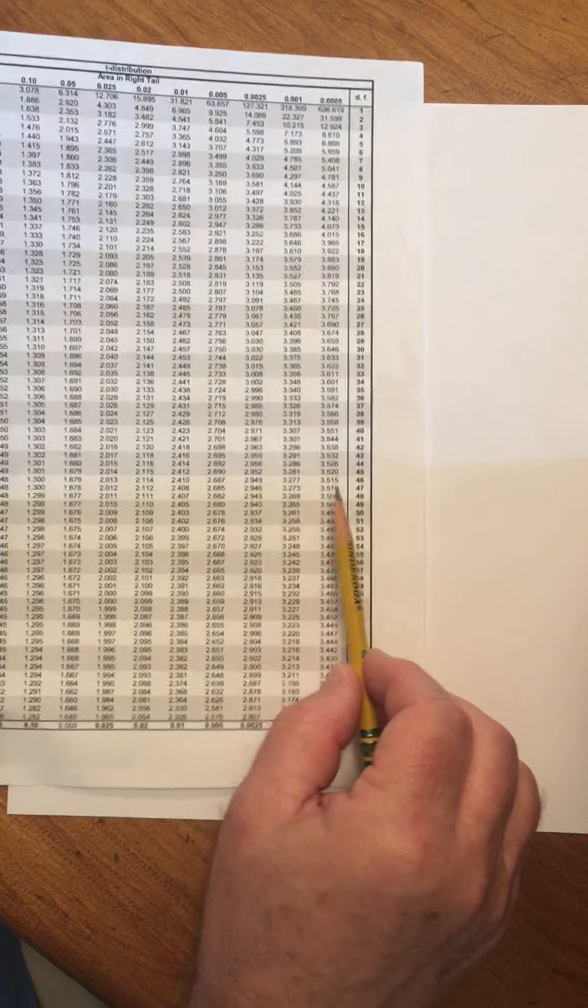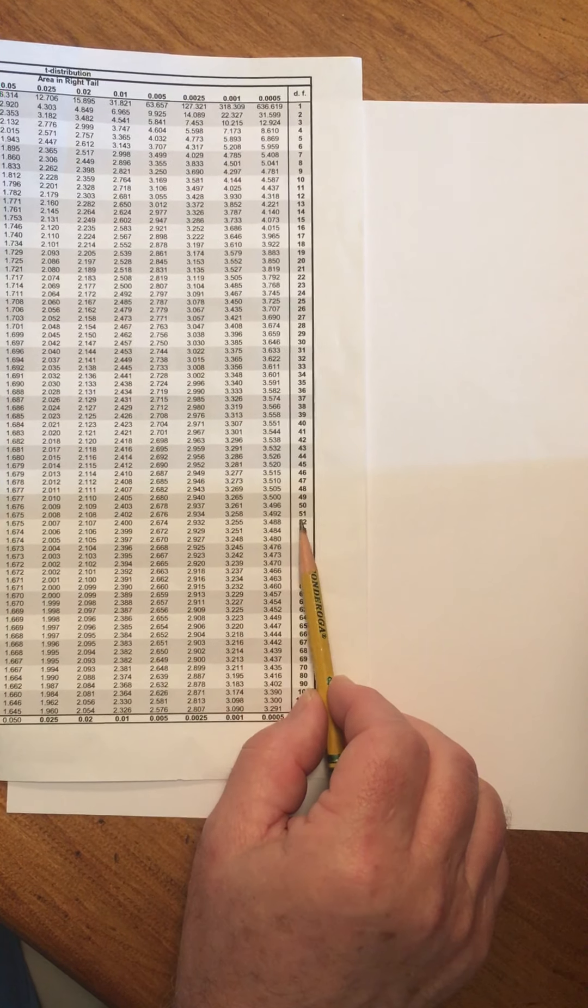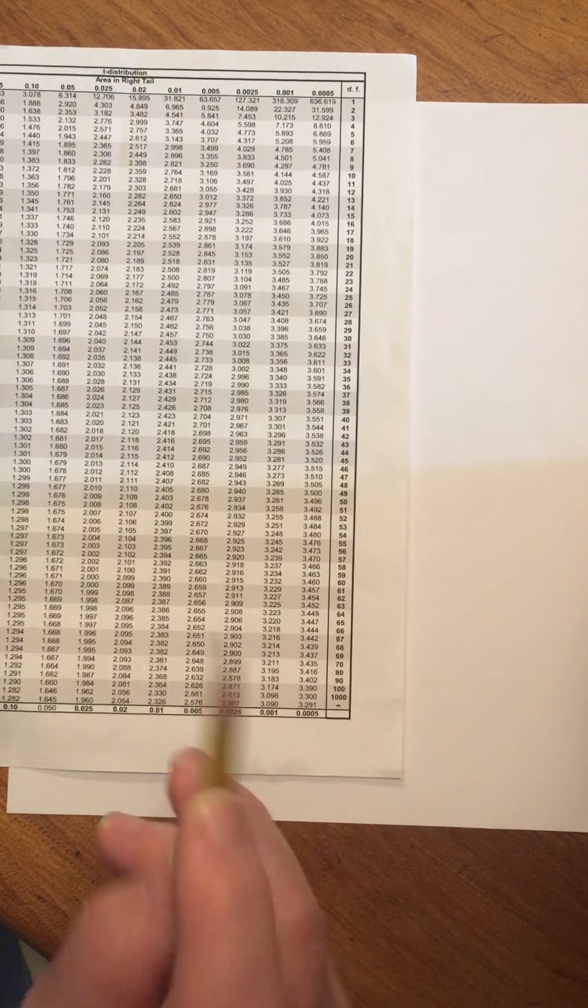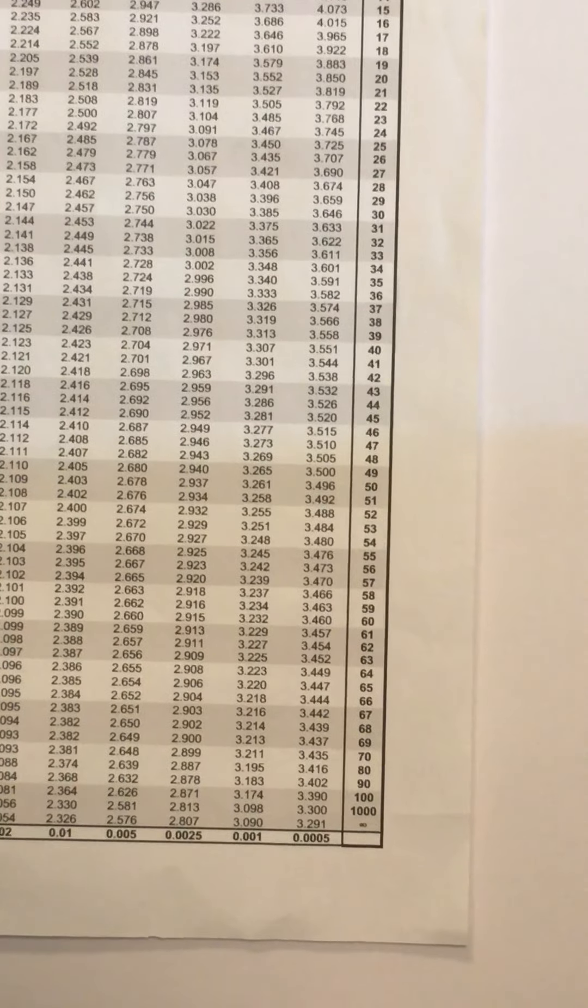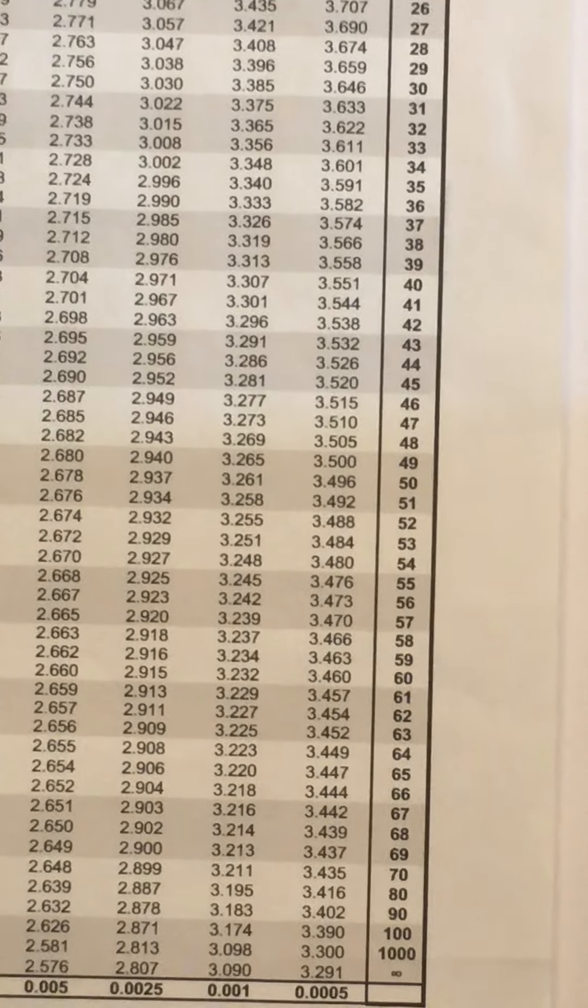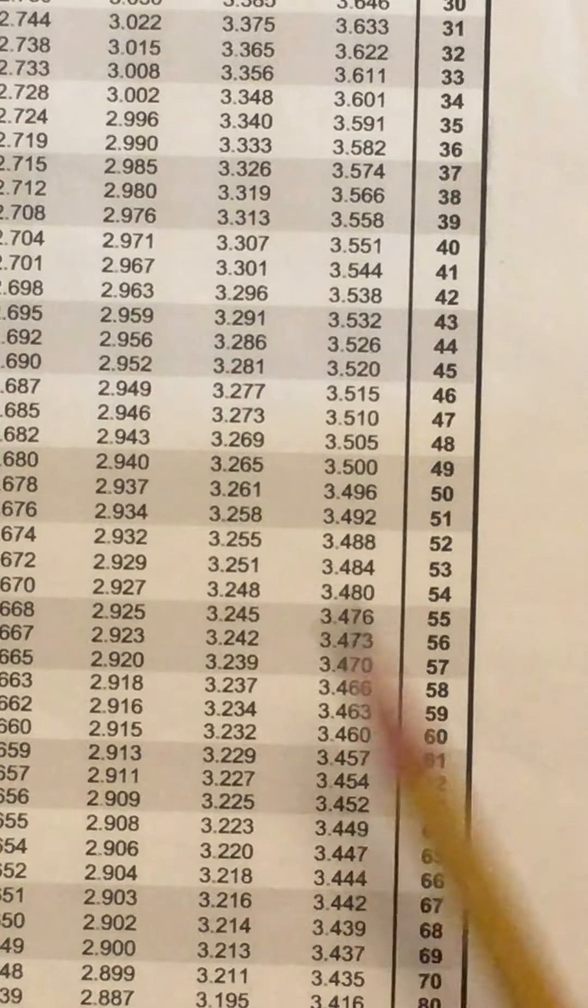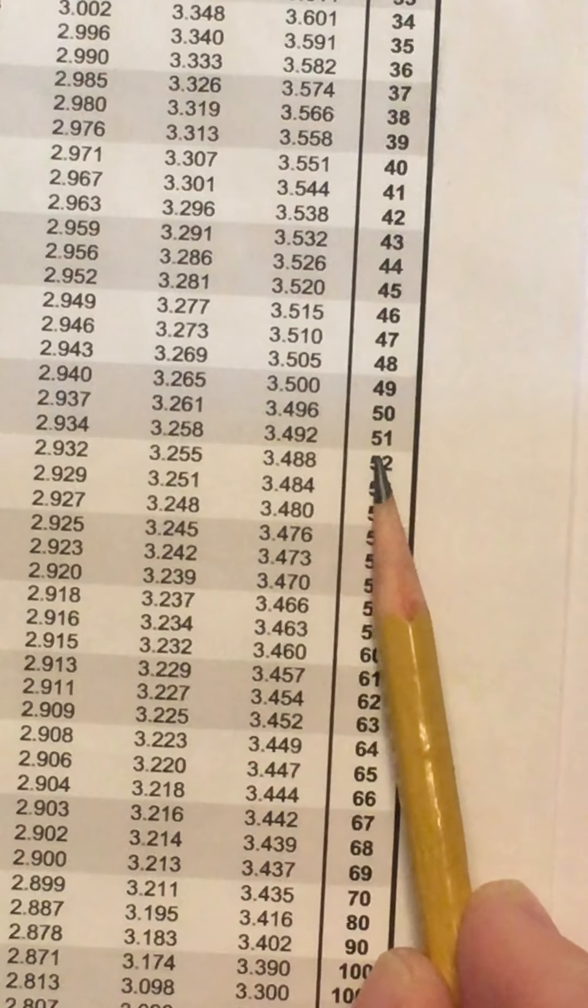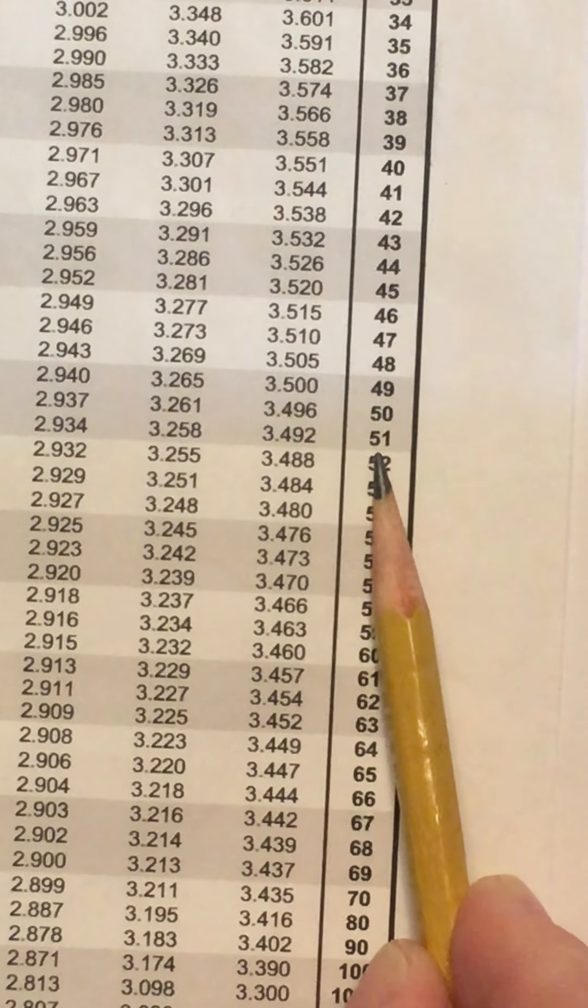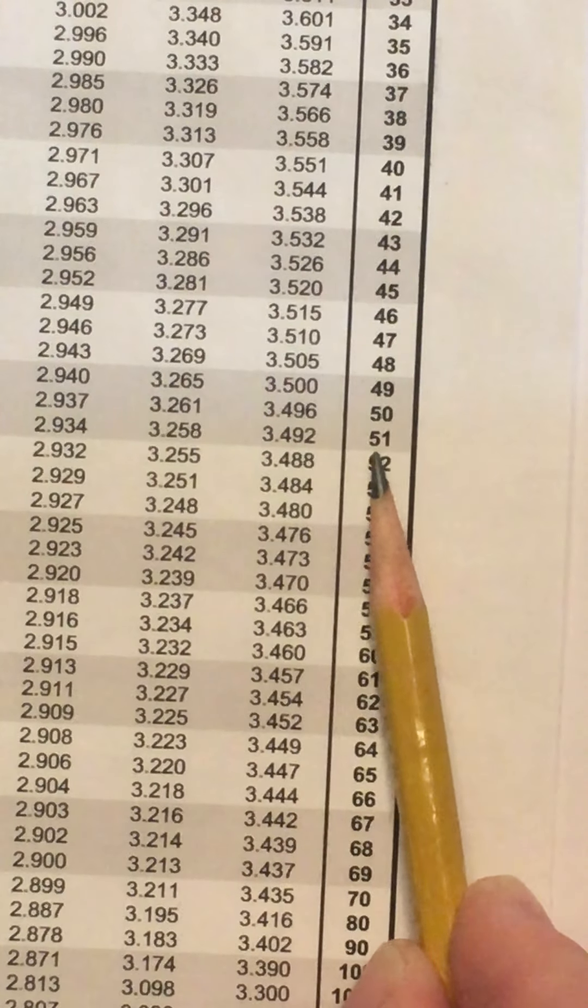So what we do, 3.402 in 51 degrees of freedom, we find the two numbers between which this falls. So I'm in 51 degrees of freedom. I want to find the two numbers between which 3.402 will fall.